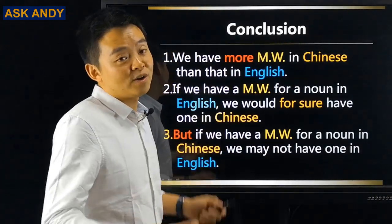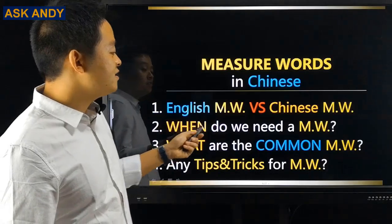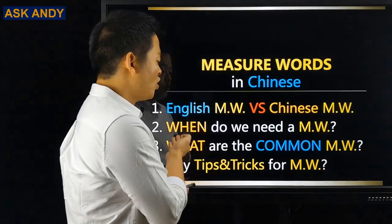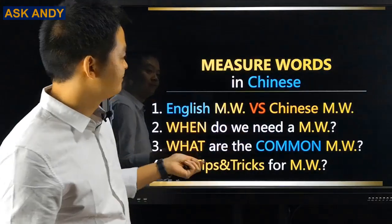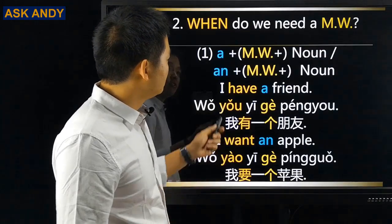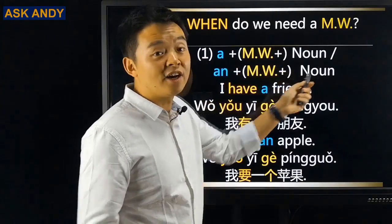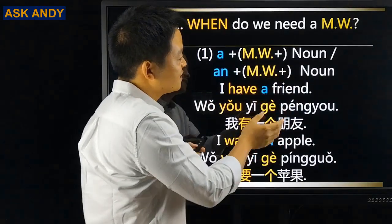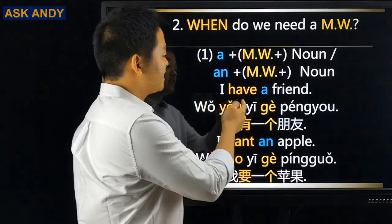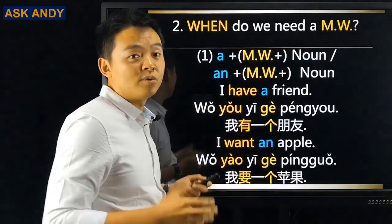So that brings us to question number two: when do we need a measure word in Chinese? Point one — in English, if we have a noun phrase like 'a' plus noun, in Chinese we need a measure word in between. For example, 'I have a friend' becomes 我有一个朋友, and 'I want an apple' becomes 我要一个苹果. The 个 is the most common measure word for countable nouns.